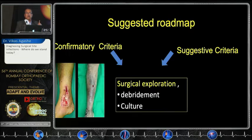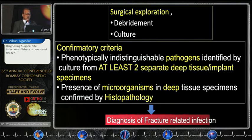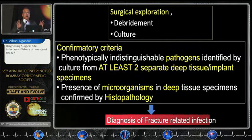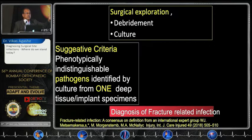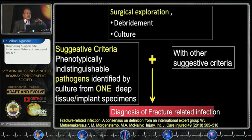It is best to debride whenever infection is suspected. After surgical exploration, confirmatory criteria include positive cultures of the same bacteria from at least two samples, or histopathology identifying bacteria. If only one sample is positive, it remains suggestive — we know that for periprosthetic infection at least six samples should be collected. However, combining clinical criteria with even a single positive culture can support the diagnosis of surgical site infection.